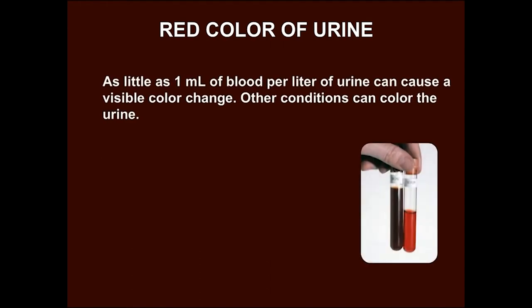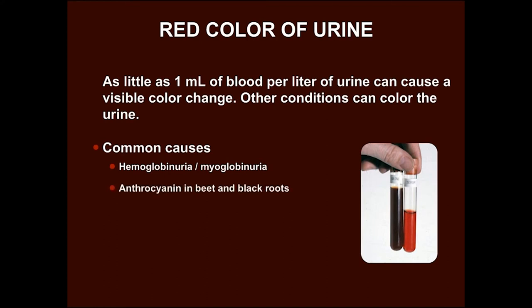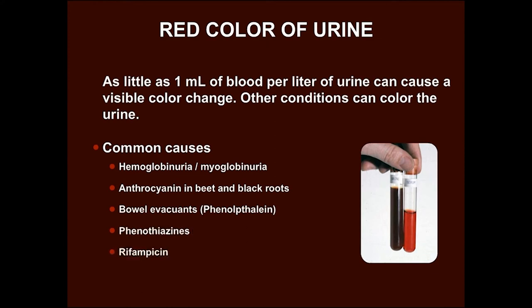One should remember that red color of urine is not always due to hematuria. Other conditions can color the urine, such as hemoglobinuria or myoglobinuria, anthrocyanin in beetroots, bowel evacuants like phenolphthalein, phenothiazines and rifampicin.